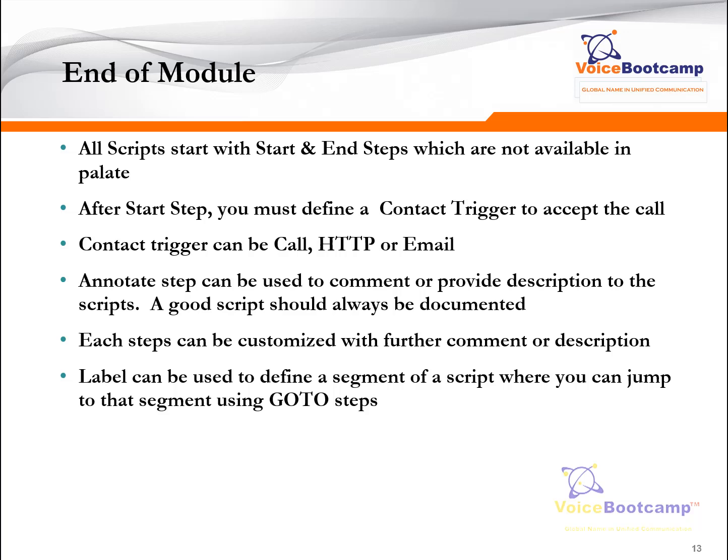To summarize this module: a script starts with start and end steps, which are not available in the palette. After a start step, you must define a contact trigger to accept a call — a contact trigger can be a call, HTTP, or email. Annotate steps can be used to comment or provide description to a script. A good script should also be documented. Each step can be customized with further comments. Label can be used to define a segment of a script where you can jump using Go To steps. That's it for chapter 2 — the next chapter will focus on variables.